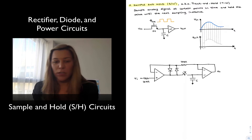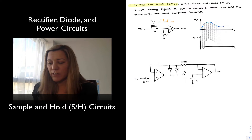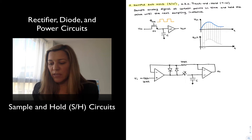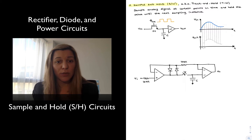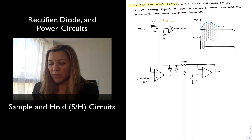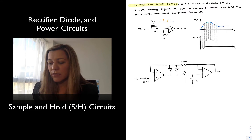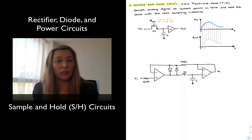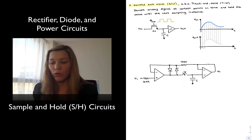I have drawn here a simplified version of a sample and hold circuit, just to illustrate its operation. Notice that we have an input signal, voltage Vin, which is being fed through a MOSFET transistor operating as a switch, to a capacitor, and then the capacitor is connected to an output buffer. There is a clock that is driving the gate of that MOSFET transistor, basically turning the switch on and off, putting the transistor into either conductive mode or non-conductive mode.